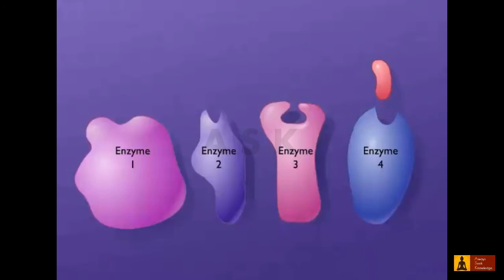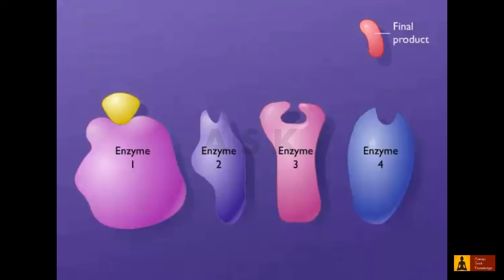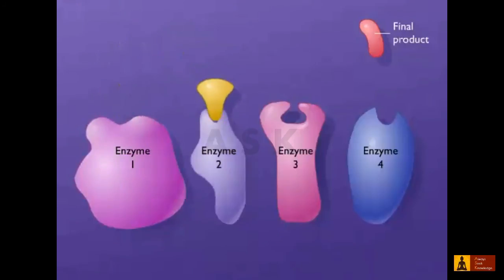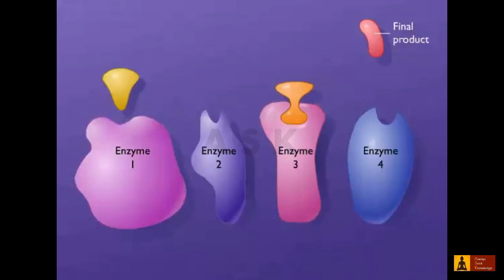When a biochemical pathway is functioning, the initial substrate is continually converted to the final product through the series of steps in the pathway.